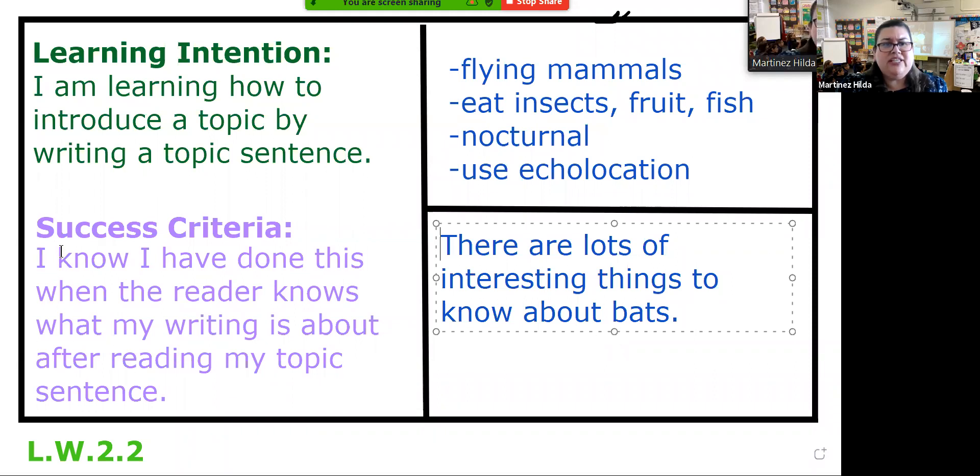Let's go back and look at our success criteria: I know I have done this when the reader knows what my writing is about after reading my topic sentence. I think if somebody reads this sentence, they will surely know that the topic of my writing is going to be bats.